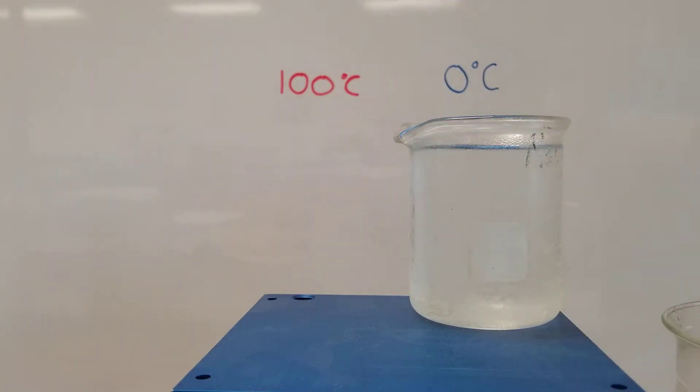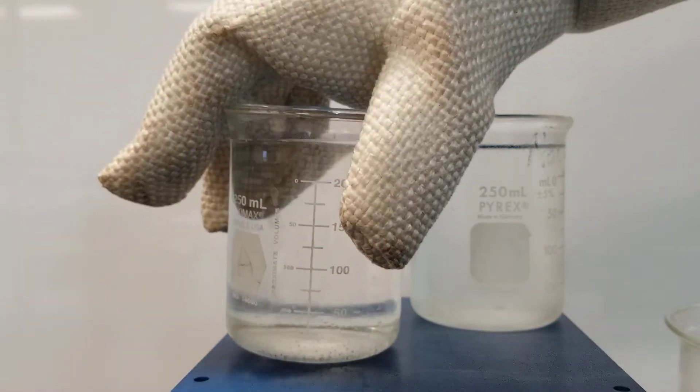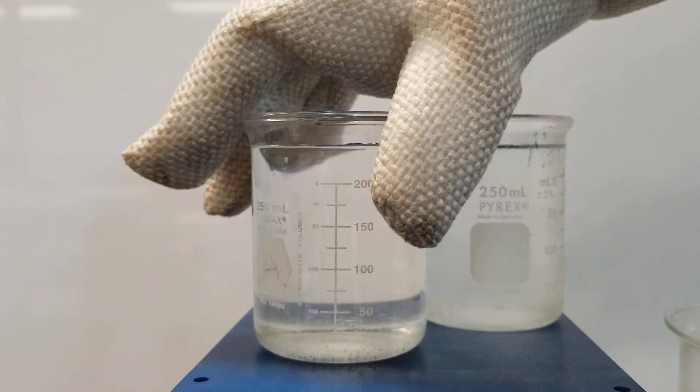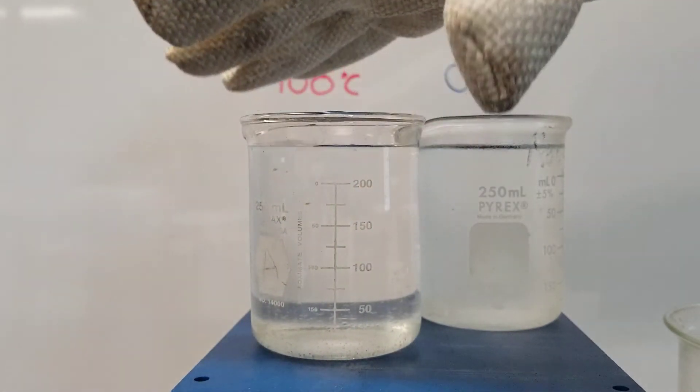And then next to it, coming off the hot plate right behind the camera, is going to be another beaker with hot water. So this water is just about boiling, and so its temperature is 100 degrees Celsius, give or take.